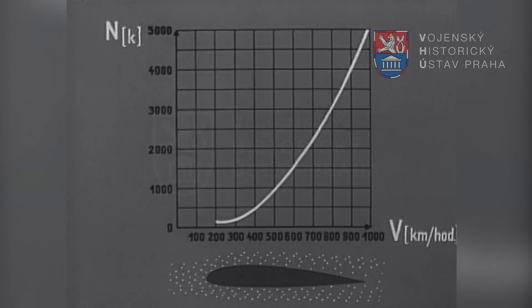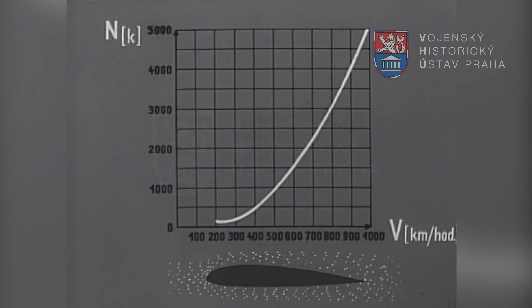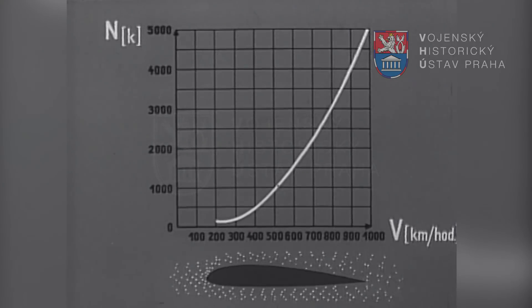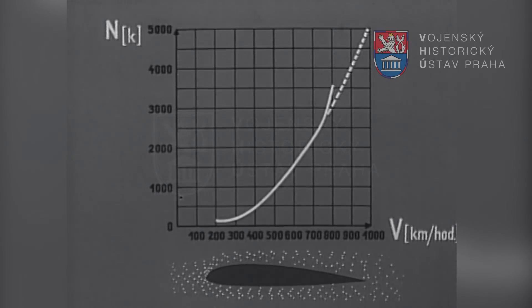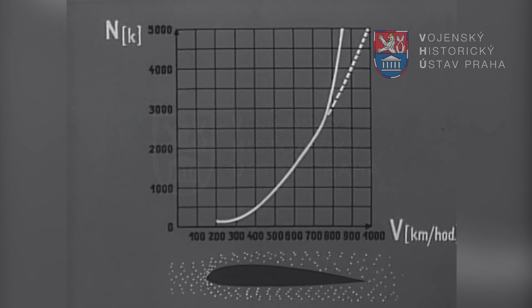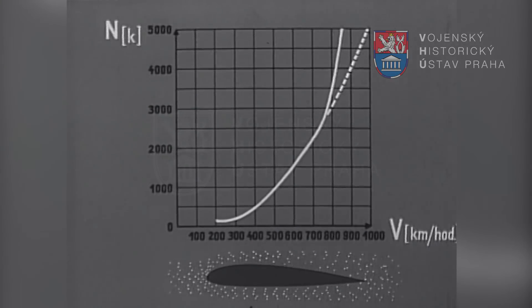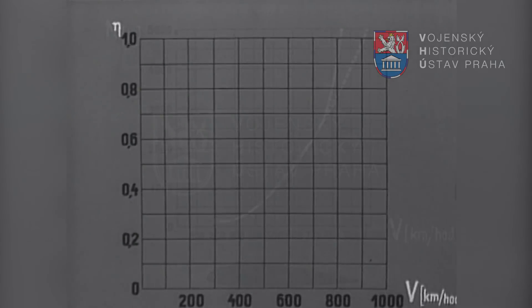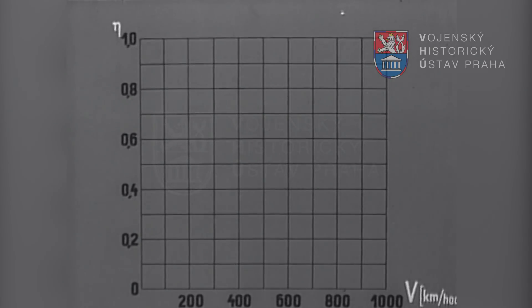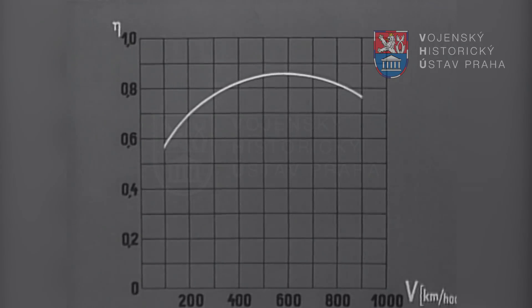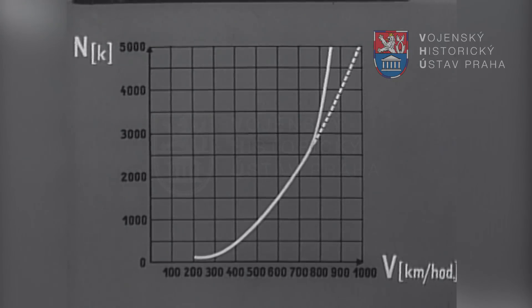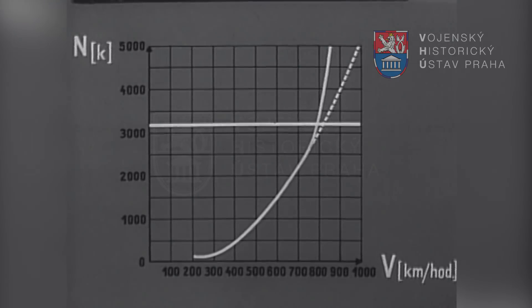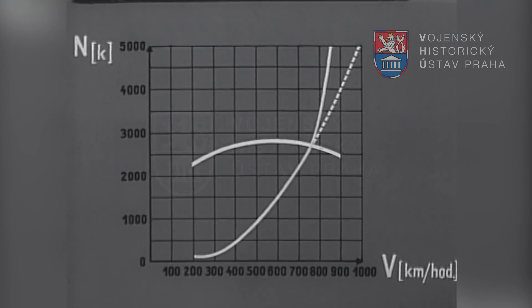Při rychlostech kolem 750 km za hodinu začíná vzduch obtékající profil podléhat určitému stlačení. Tvar proudu se zakřivuje, jako by se profil stával tlustším, a potřebný výkon začne stoupat s pátou mocninou rychlosti. Výkon vyvíjený motorem přeměňuje vrtule v tah. Účinnost vrtule stoupá do rychlosti kolem 500 km za hodinu a pak začne pronikavě klesat, což má vliv na užitečný výkon pohonné skupiny — pístový motor plus vrtule — který je značně nižší než efektivní výkon samého motoru.